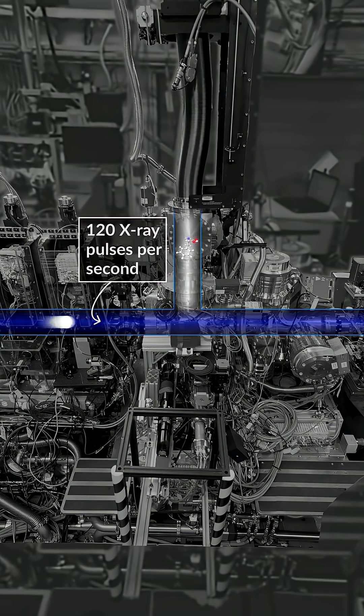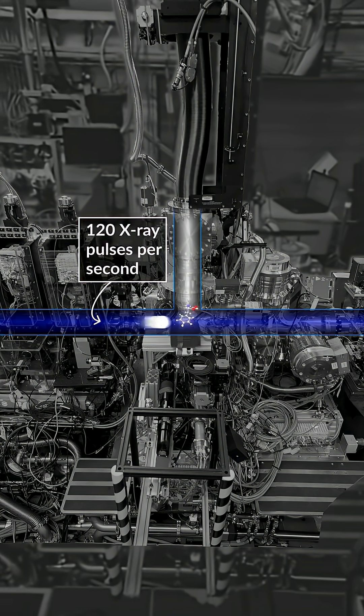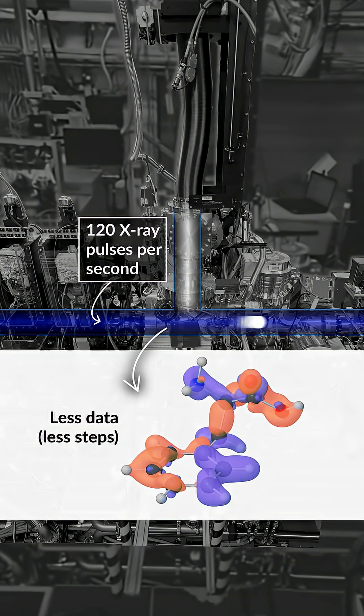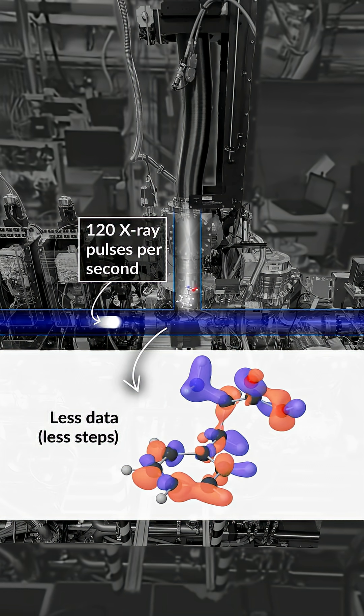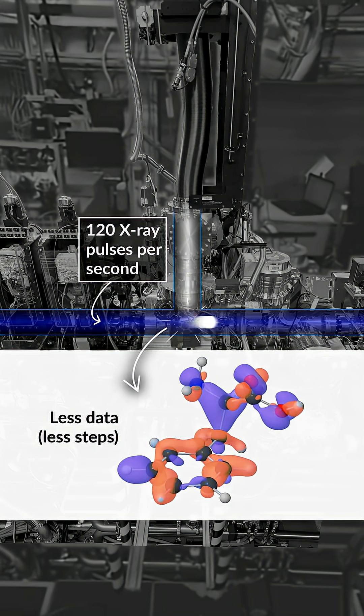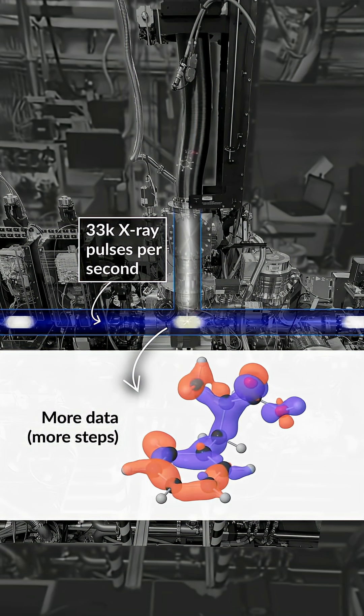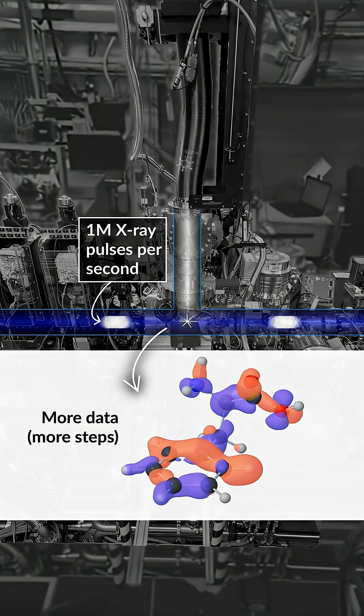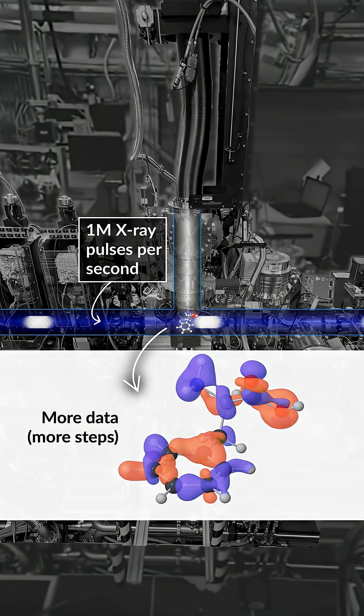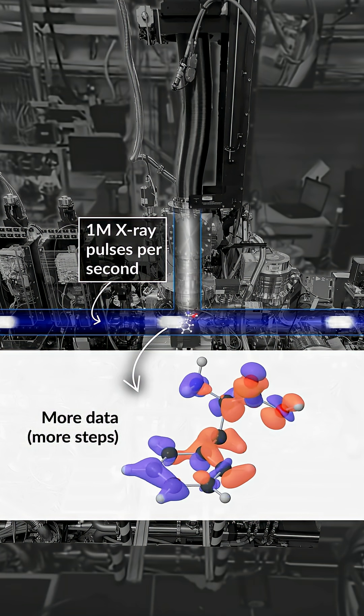Until recently, this x-ray laser could produce 120 pulses of light a second, and that only gave us an incomplete picture into electron behavior. But now, after a groundbreaking upgrade, it can produce 33,000 pulses of x-rays per second and will eventually produce up to a million pulses per second with the same ultra-short shutter speed.